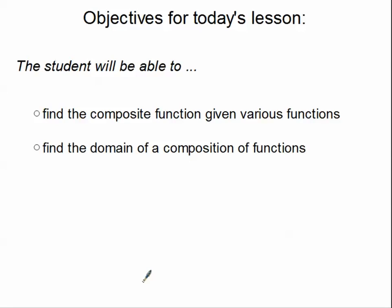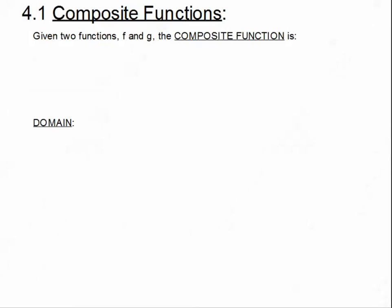Hi everybody and welcome to the first tutorial for our new section. We're going to be looking at our first objective which is to find the composite function given various other functions. We've jumped into chapter 4 now — we're in 4.1 if you need to reference that in the textbook. When we're given any two functions, we'll just call them f and g.